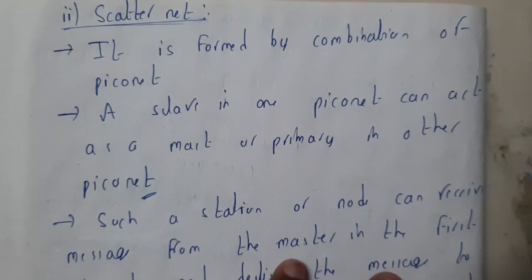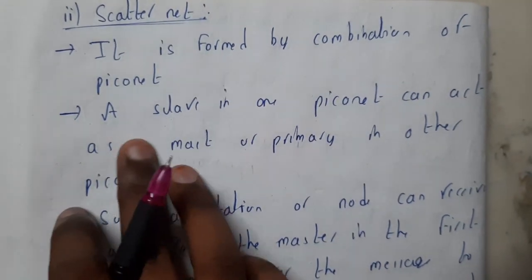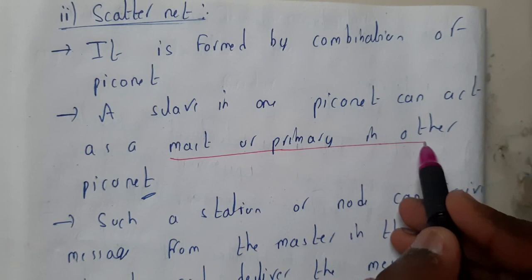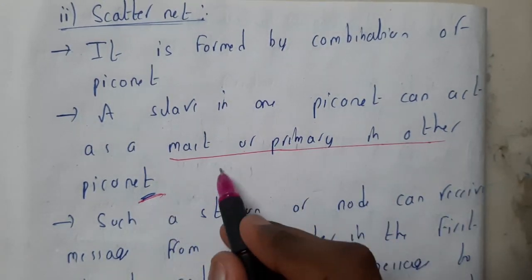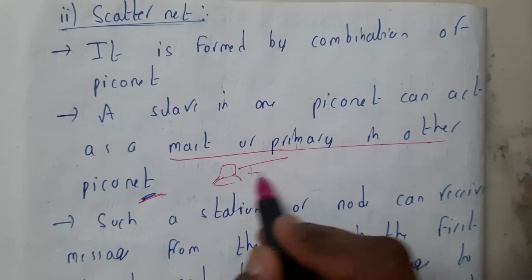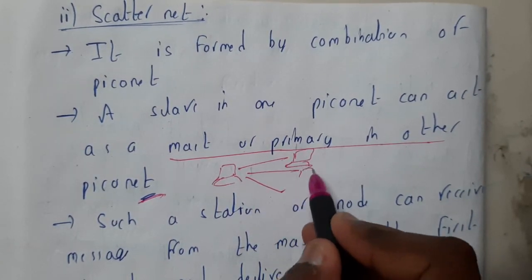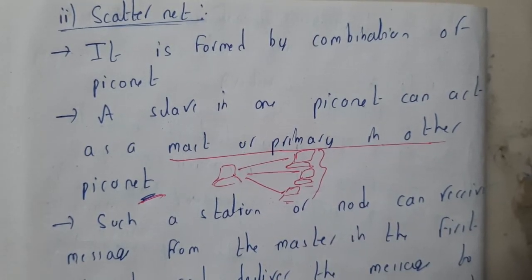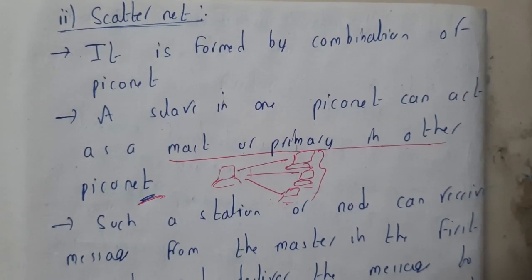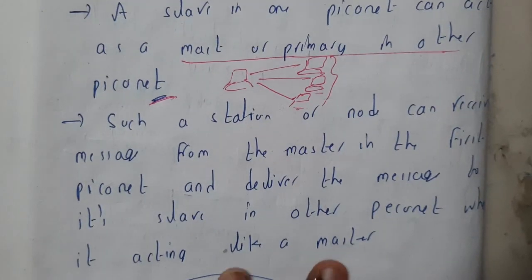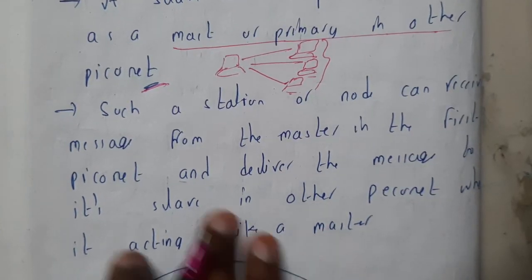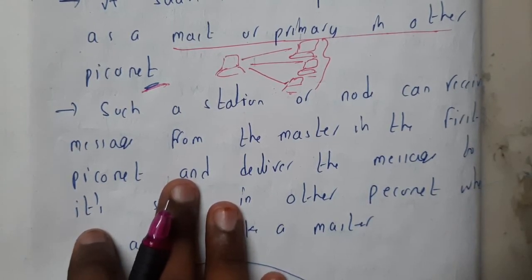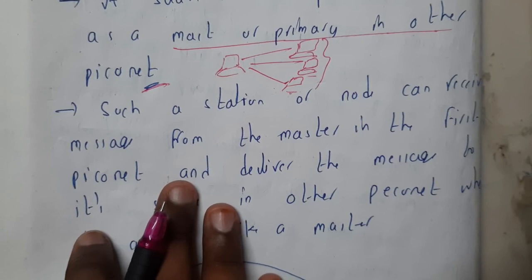Now let us go through scatternet. Scatternet is nothing but the combination of a few piconets. A slave in one piconet can act as a master or primary in another piconet. In one piconet a node might be a slave, but it can give the data to some other system — acting as a master and transferring data to multiple slaves in some other piconet. Such a station or node can receive data from the master of the first piconet and send data to the slaves working as a master in the second piconet.